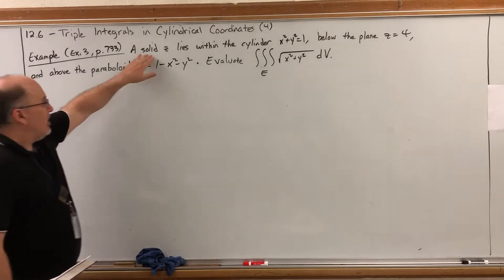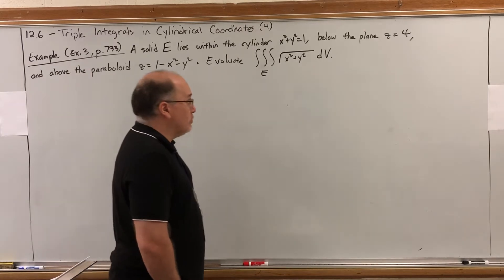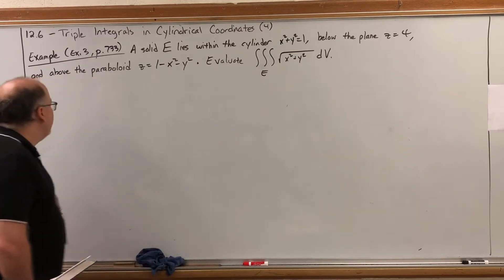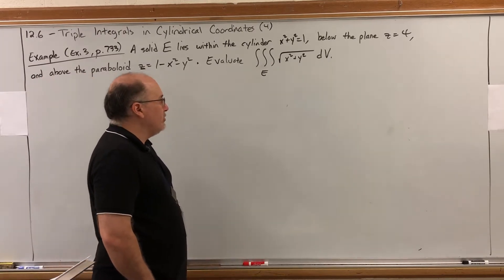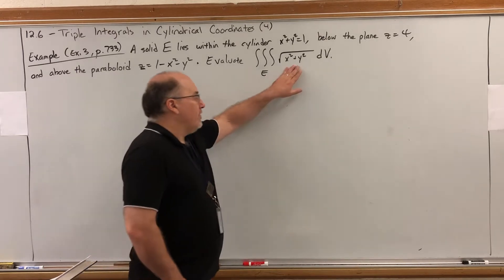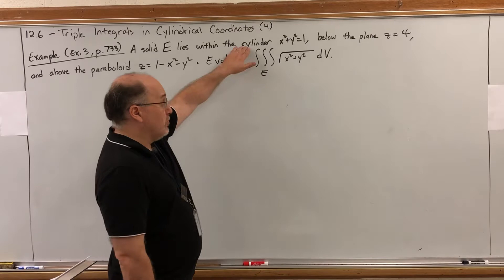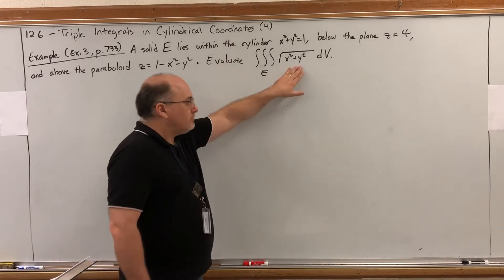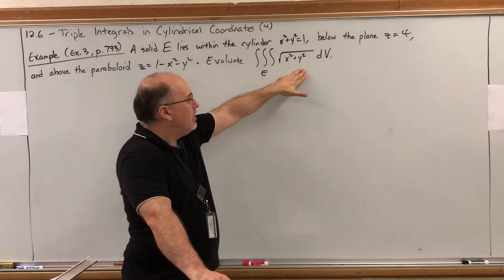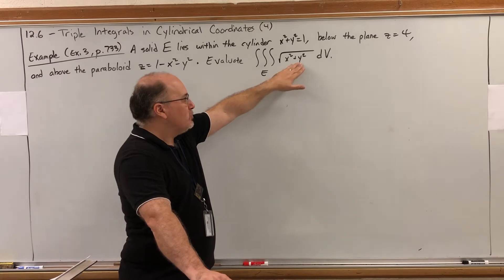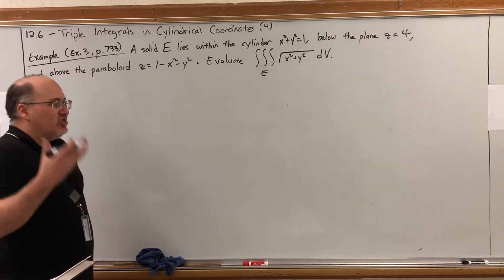Back to this modified problem: a solid E lies within the cylinder x² + y² = 1, below the plane z = 4, and above the paraboloid z = 1 − x² − y². The question is to evaluate the triple integral over solid E of √(x² + y²) dV. Several things scream cylindrical coordinates here — the word 'cylinder' itself, and the integrand: integrating √(x² + y²) rectangularly can be tricky or impossible, but it simplifies easily in cylindrical coordinates.